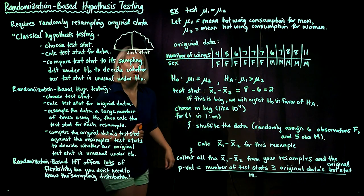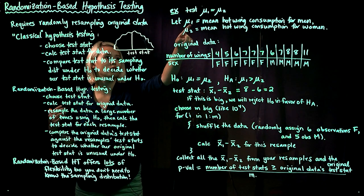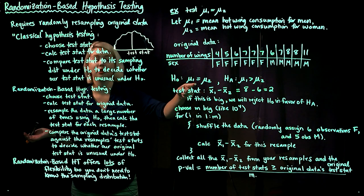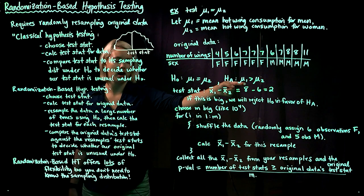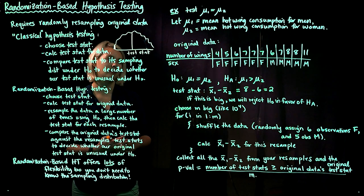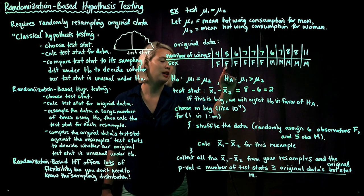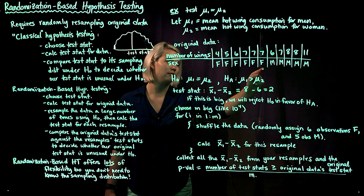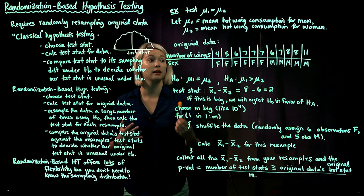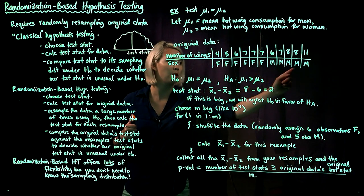Let's do an example. We're trying to compare two means — let μ₁ be the mean hot wing consumption for men and μ₂ be the mean hot wing consumption for women. The null hypothesis is that these two means are equal, and we're wondering whether men on average consume more hot wings than women. We have our data set with number of wings and the sex of each person: six female observations (4, 5, 6, 7, 7, 7 wings) and five male observations (6, 7, 8, 8, 11 wings). The mean for women is 6 and the mean for men is 8.